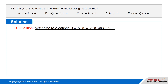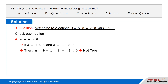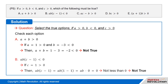We are required to select the option that is true if A is greater than 0, B is less than 0, and C is greater than 0. Let us check each option. Option A: A plus B is greater than 0. If A equals 1 (which is greater than 0) and B equals negative 3 (which is less than 0), then A plus B equals 1 minus 3, which equals negative 2, which is less than 0. Hence, this option is not true.